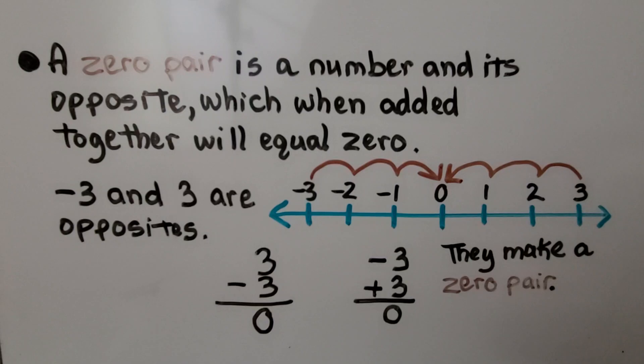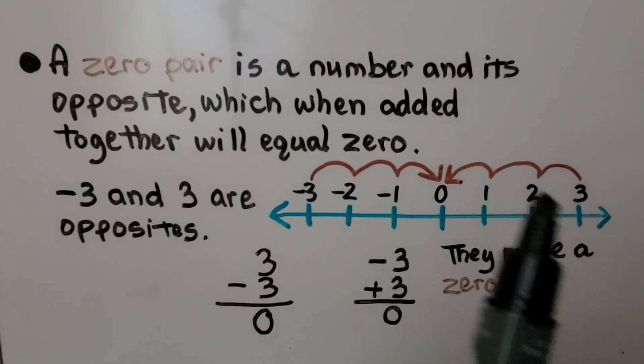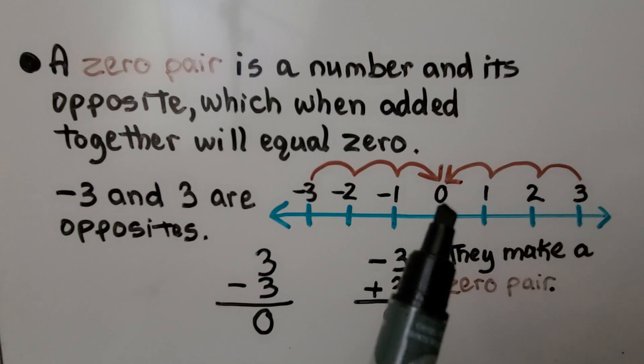A zero pair is a number and its opposite, which when added together will equal zero. We have negative 3 and positive 3. When we add 3, we get to zero.